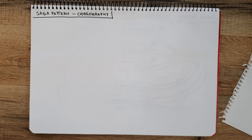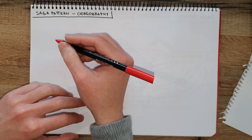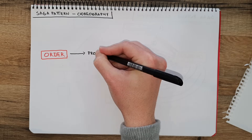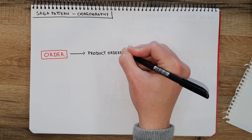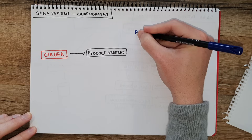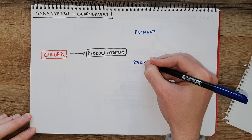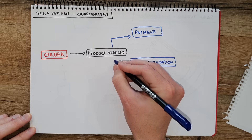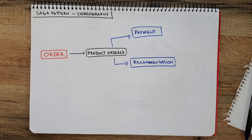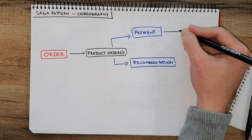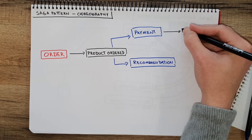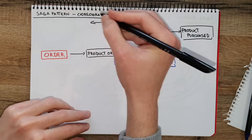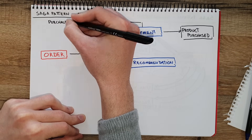Going back to the same example: the user buys a product on our site and calls the order service as before. In this case, the order service will send an event like 'product ordered'. This event can be consumed by the payment service, but also by other services that can be parallelized — for example, the recommendation service. The payment service can then either confirm or reject the payment. If confirmed, it sends an event called 'product purchased'. If it fails, it sends a 'purchase failed' event.